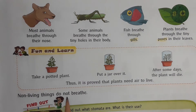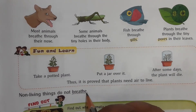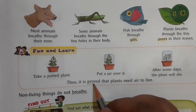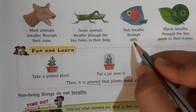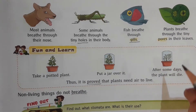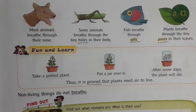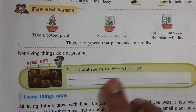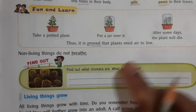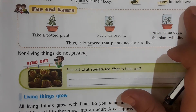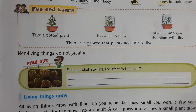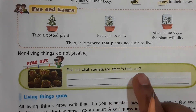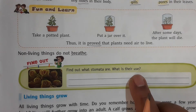Non-living things do not breathe at all. Underline the words: breathe, proved, gills, pores. Now find out what stomata are and what is their use. Stomata are the tiny pores found on the underside of leaves, and they help the plants to breathe.